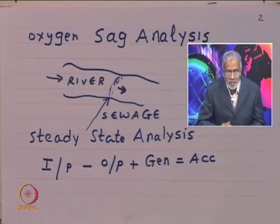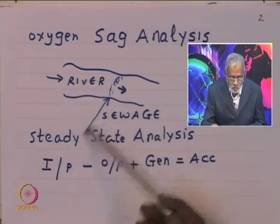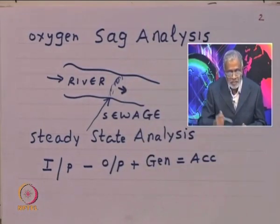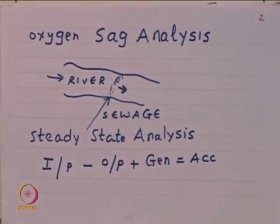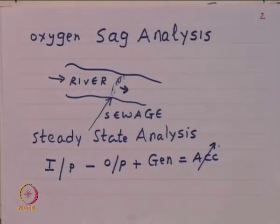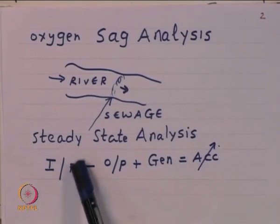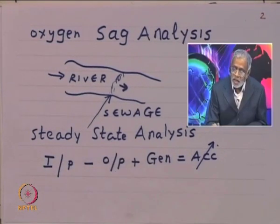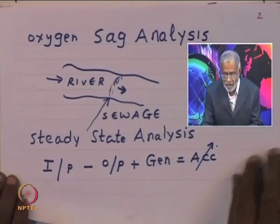We do this exercise at steady state, assuming river flows and sewage flows are known. The steady-state material balance — inputs, outputs, generation, accumulation — has accumulation set to zero. The balance is for the amount of oxygen supplied to the water in the river: how much pollution load comes in, how much goes out, how much oxygen is consumed, and at steady state this goes to zero.